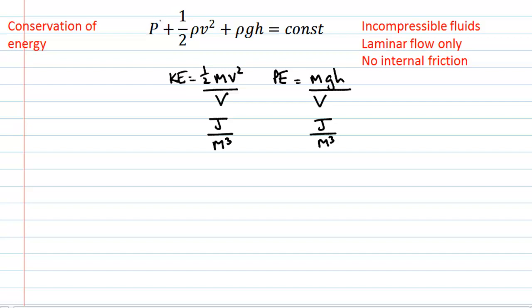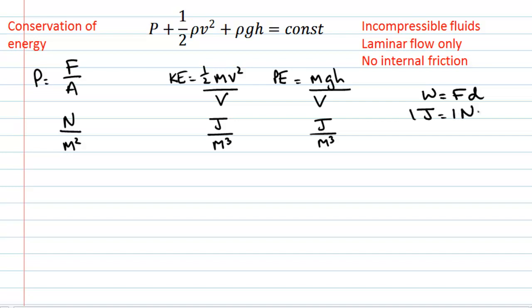Let's have a look at the first term — the pressure. Is that an energy density? Pressure can be written as force divided by area: units of newtons over meters squared. There's a relation between joules and newtons from the equation for work: work is force times distance, so one joule equals one newton-meter, meaning one newton equals one joule per meter. Multiplying by meters squared on the denominator gives joules per meter cubed. So pressure is also an energy density, and Bernoulli's equation is really just conservation of energy density.